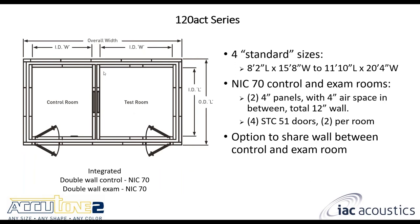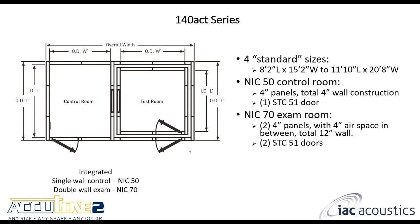The 120 ACT is different because the two rooms are integrated into one another — not independent. It's essentially two single wall rooms with a perimeter wall built around them and extra doors. Each room achieves NIC70, and the room-to-room performance is also NIC70 due to the two four-inch thick walls with a four-inch airspace between them.